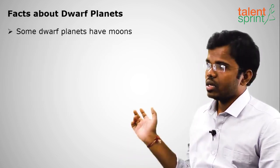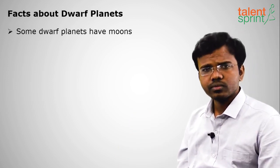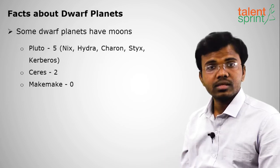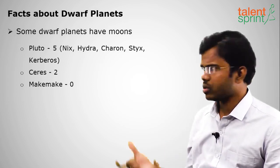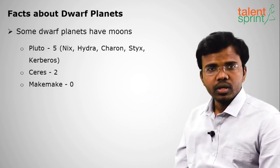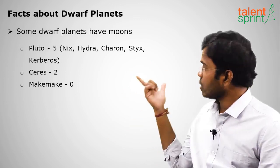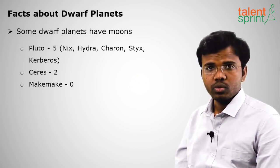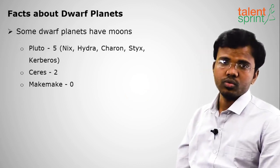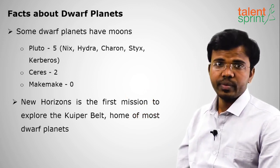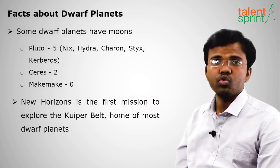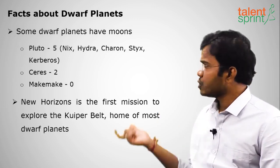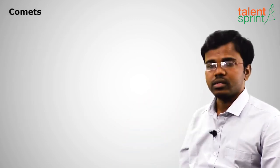Some dwarf planets have moons — Pluto has five: Nix, Hydra, Charon, Kerberos, and Styx. General studies exams have asked about Nix and Hydra as moons of Pluto. Ceres has two moons and Makemake has zero moons. New Horizons is the first space mission sent to study the Kuiper Belt, which is the home of most dwarf planets — the New Horizons mission of NASA.